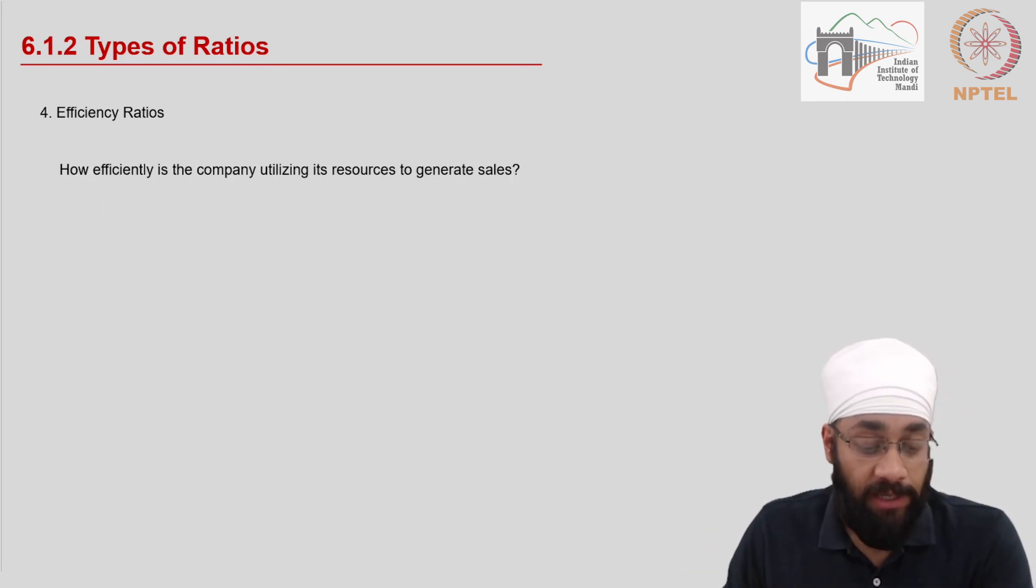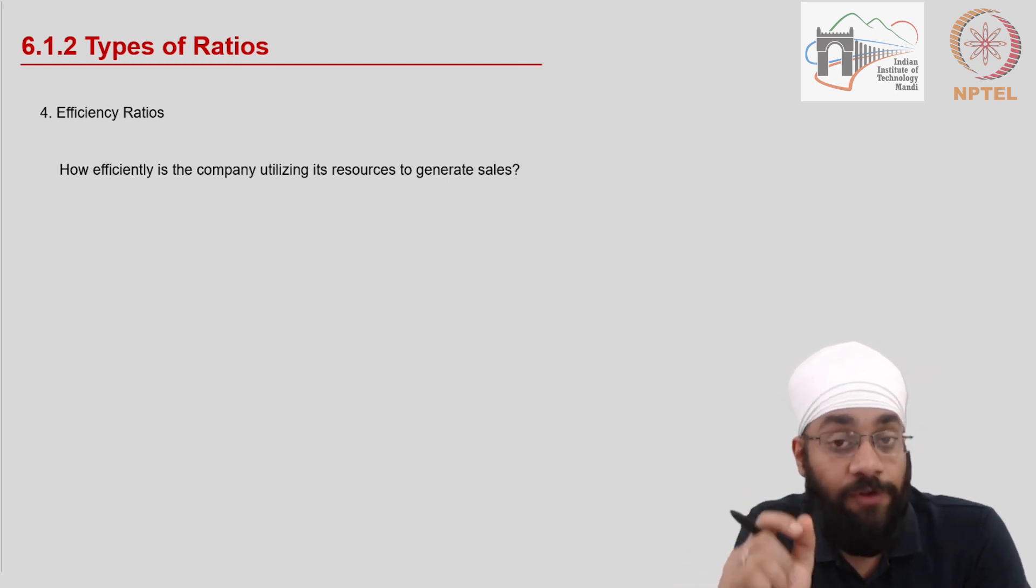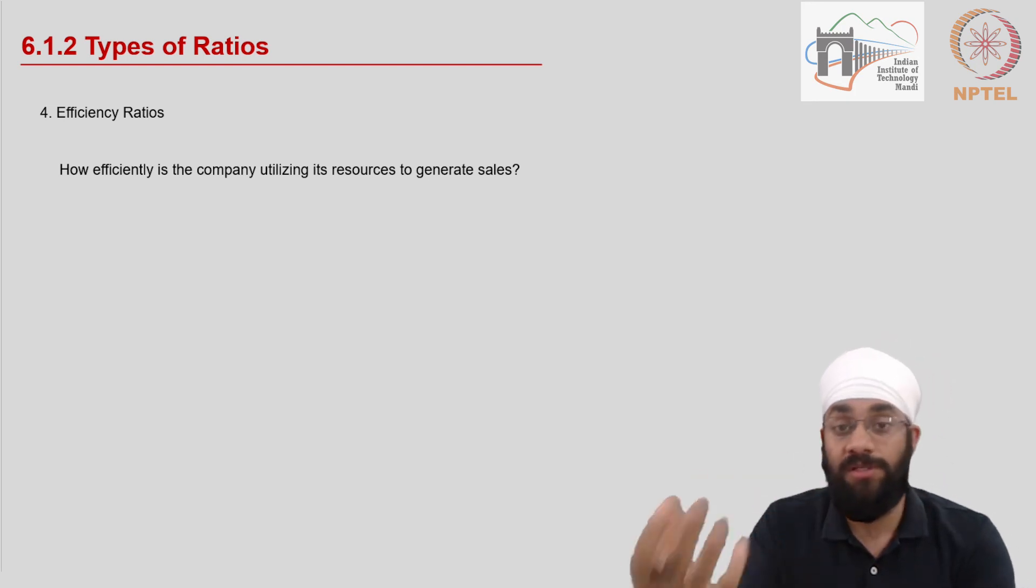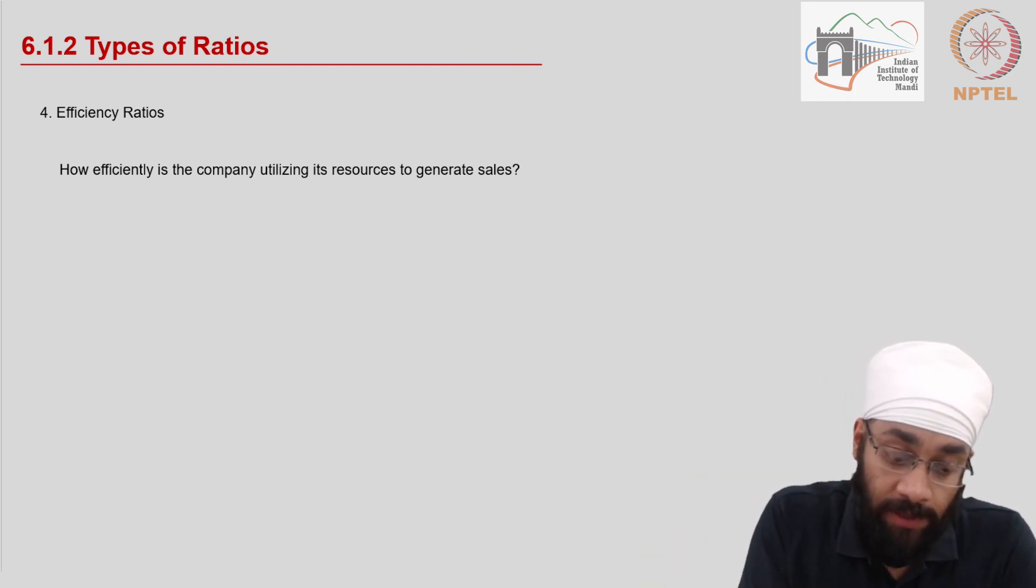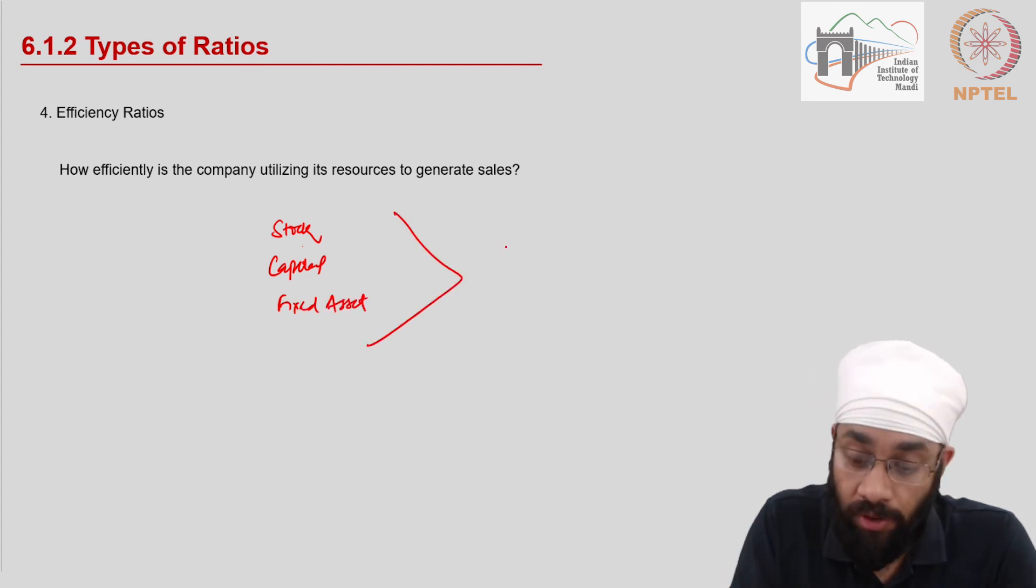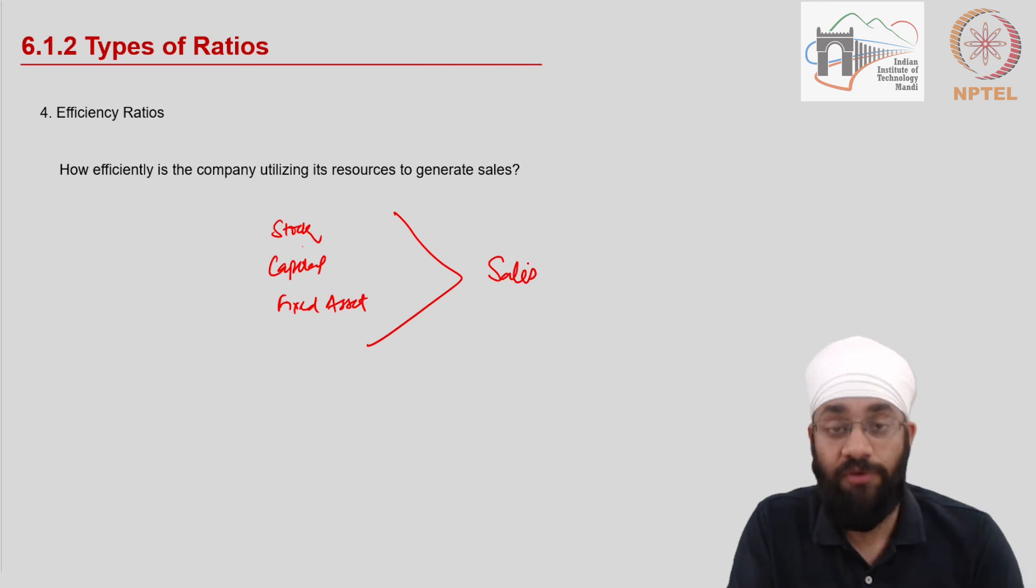The final category, the fourth category of indicators is called efficiency ratios. And efficiency, as I earlier said in the previous video, are about the input and output ratio. How much are you able to invest and how much are you able to generate? So from a company's point of view, the resources that are invested are stock into the business. You have capital into the business. You have fixed assets that are purchased and everything is done in order to generate sales, in order to generate revenue.